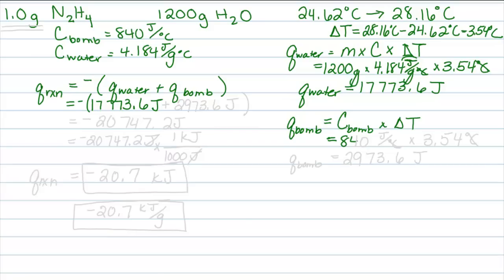The specific heat of the bomb is given to us, 840 joules per degree Celsius, and we multiply by 3.54 degrees Celsius. And when we get that, we get 2,973.6 joules as my Q of the bomb. It didn't absorb as much as the water did, but it still plays an important role in this problem. You can't simply ignore the amount of energy it gained.